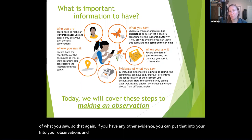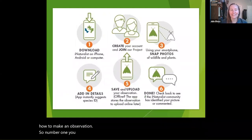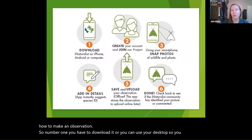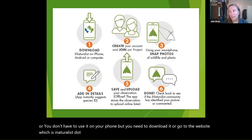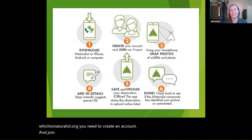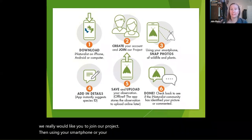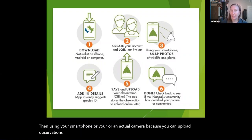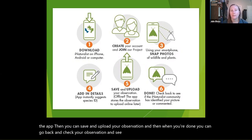Here's how to make an observation. First you have to download the app, or you can use your desktop at iNaturalist.org. You need to create an account and join our project — it's really important to join our project. Then using your smartphone or a regular camera, you take a photo and add details through the app, then save and upload your observation. When you're done, you can go back and check your observation and see what other people in the community are saying.